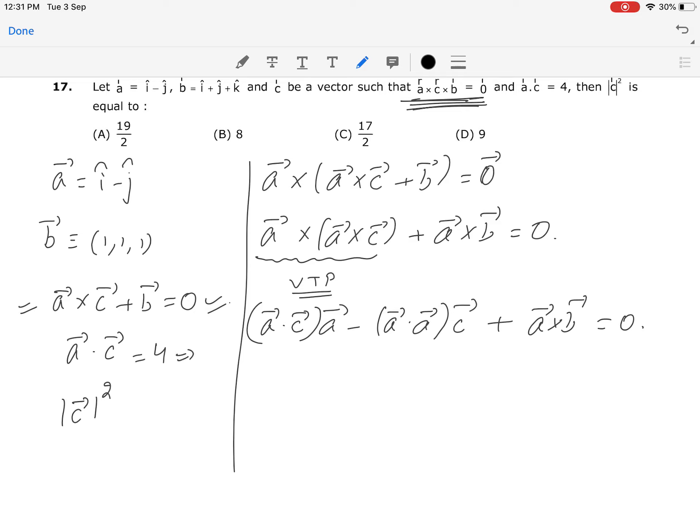A vector dot c vector value is given as 4, so we can put 4 here. As a result, c vector's final value will be 4 times a vector plus a vector cross b vector, whole divided by modulus of a vector squared.